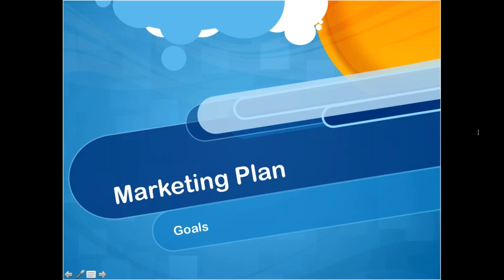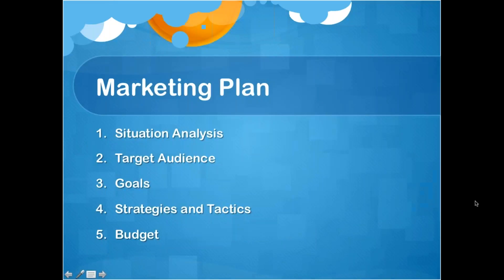Hey guys, hope your week's going well. We're talking about our marketing plan this week. We've taken some time to dive into the different steps of the marketing plan, and today we're going to continue doing that. Today's topic is going to be on goals. Just a quick review: the marketing plan consists of five steps — situation analysis, target audience, goals, strategies and tactics, and budget.